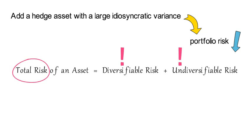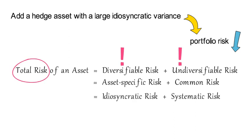Others say that total risk of an asset is asset-specific risk plus common risk. And in other occasions, you might hear that total risk of an asset is the sum of idiosyncratic risk and systematic risk.